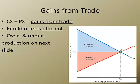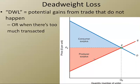Let's see what happens if we don't produce at this equilibrium point. We're going to get what we call dead weight loss.